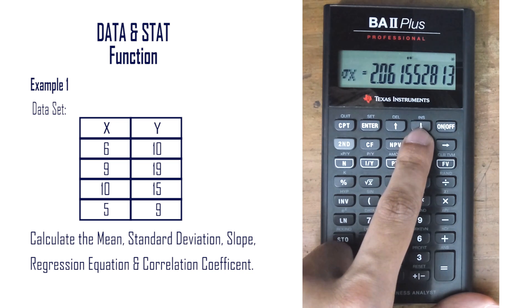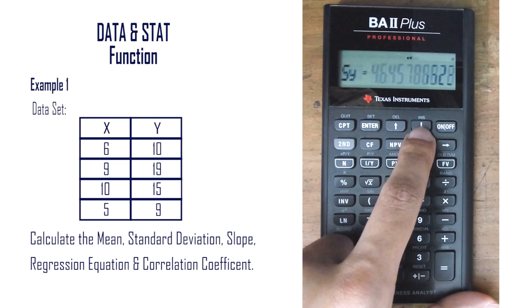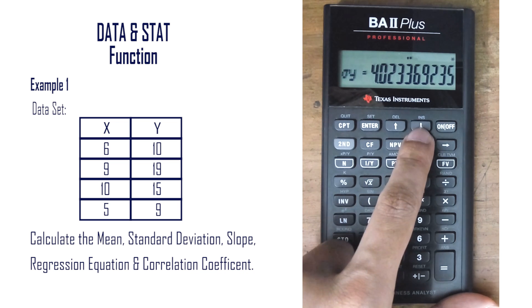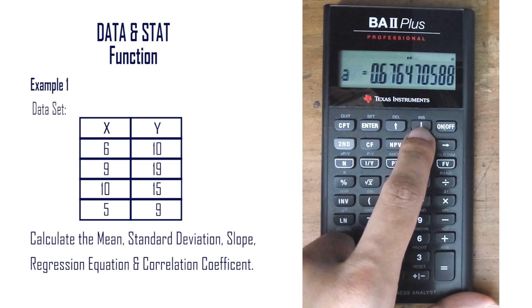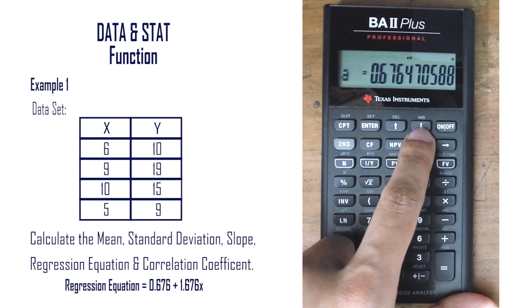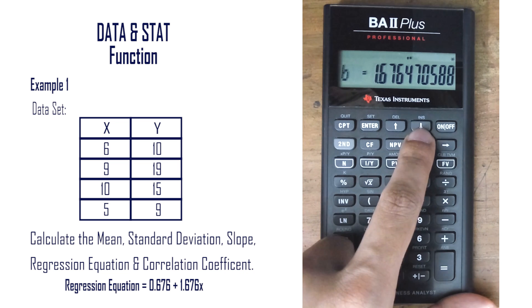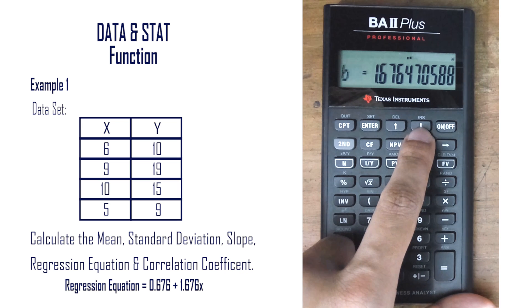Scrolling down gives us the population standard deviation sigma. Then we get y-bar, followed by the sample standard deviation of y, then the population standard deviation of y. After that, we get the value of a, which is the y-intercept — the value of y when x is 0. Scrolling down gives us the slope b, so the regression equation is 0.676 plus 1.676x.